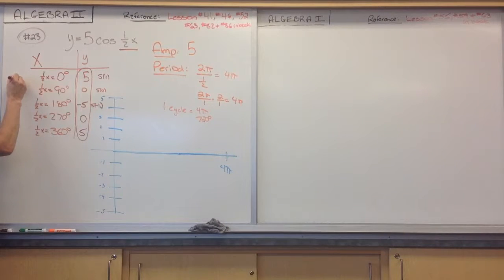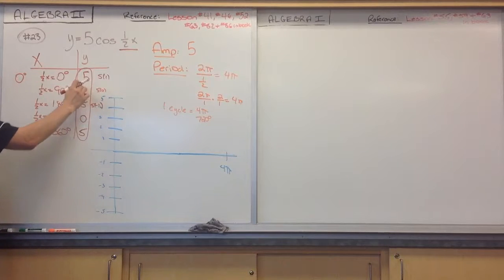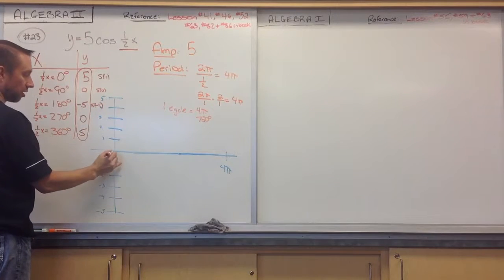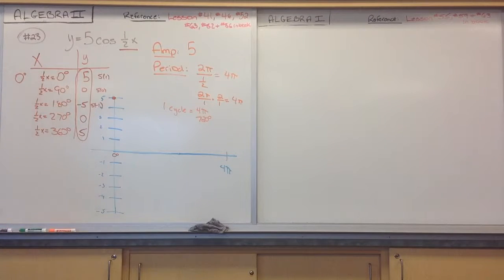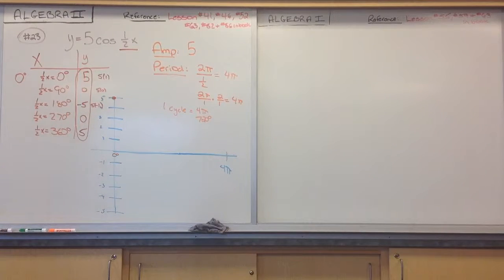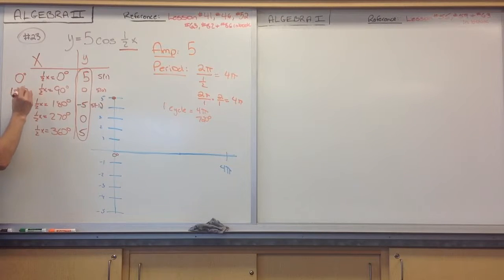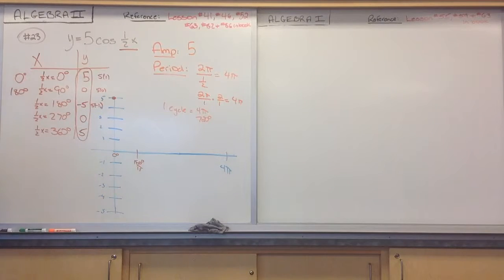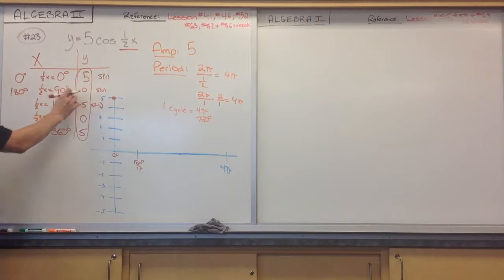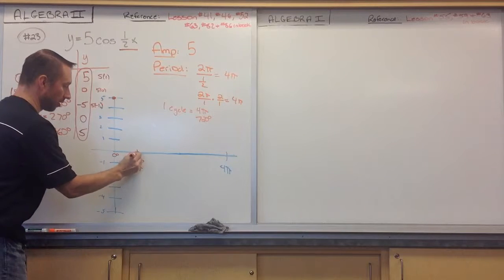2 times 0 is 0, so at 0 degrees the amplitude is 5. 90 times 2 is 180, which is pi, and at that point amplitude is 0. 180 times 2 is 360, which is 2 pi, and amplitude is negative 5. 270 times 2 is 540, which is 3 pi, and amplitude is 0.